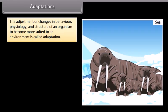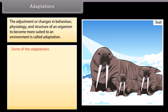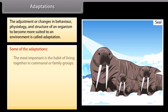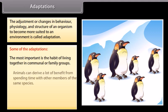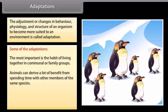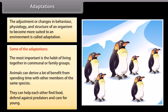The adjustment or changes in behavior, physiology, and structure of an organism to become more suited to an environment is called adaptation. One of the most important adaptations is the habit of living together in communal or family groups. Animals can derive a lot of benefit from spending time with other members of the same species — they can help each other find food, defend against predators, and care for young. Several animal species, including scorpion fish and leaf frogs, can change their appearance to match their surroundings.